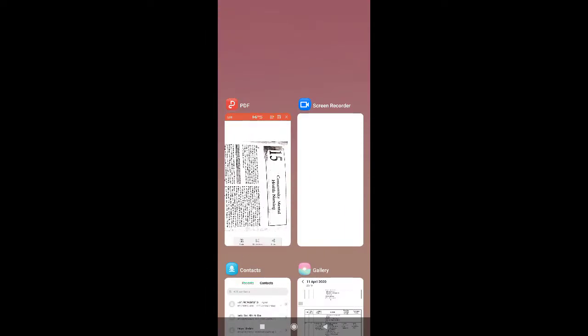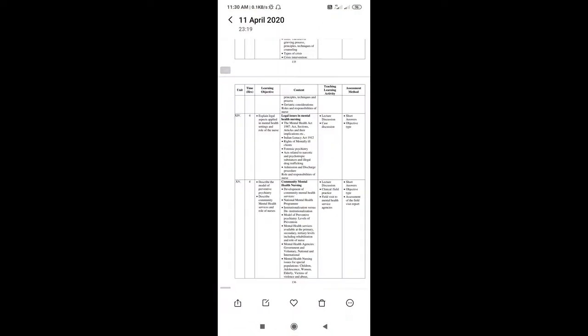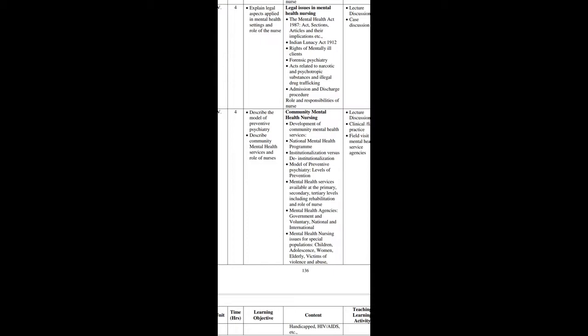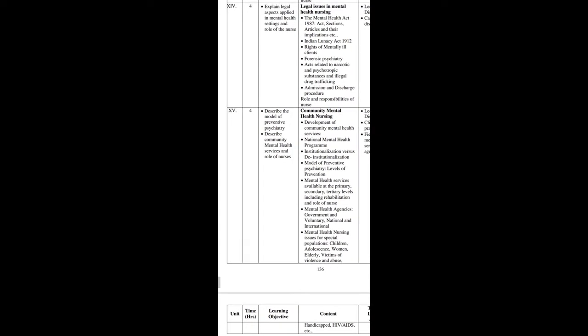So firstly we will see what topics are there in the unit. First is development of community mental health services; second is national mental health program; third is institutionalization versus deinstitutionalization; then models of prevention in psychiatry; then mental health services; then mental health agencies and mental health nursing issues for special populations like children, adolescents, women, elderly, and victims of violence and abuse.